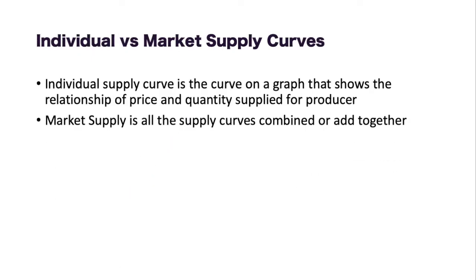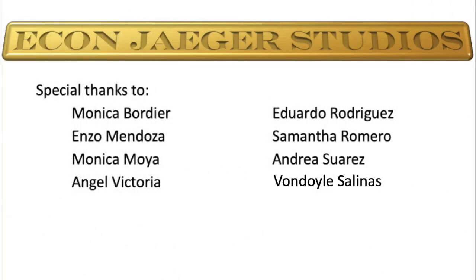For individuals versus market supply: individual supply curves show the relationship between price and quantity supplied for a single producer. Everybody has their individual supply curve, but if we take all those supply curves and add them together, that gives us our market supply curve. That's it for today — thank you everybody for watching this video. Please subscribe to my channel, and leave any comments below. Thank you and have a great day!